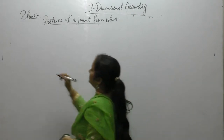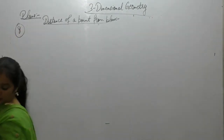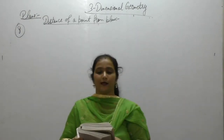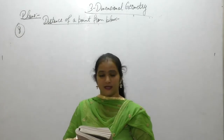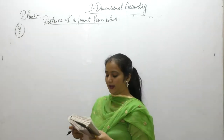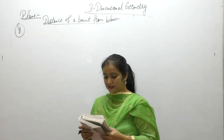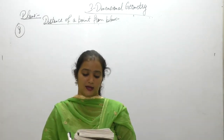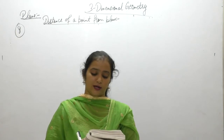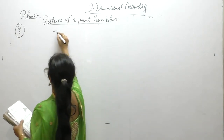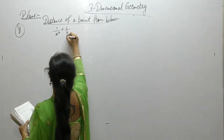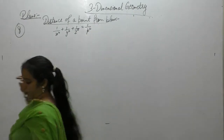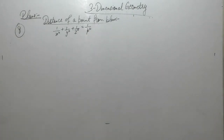Now, next one. If a variable plane at constant distance p from the origin meets the coordinate axis in points A, B, C, through these points planes are drawn parallel to the coordinate planes. Show that the locus of the point of intersection is 1 upon x square plus 1 upon y square plus 1 upon z square is equal to 1 upon p square.